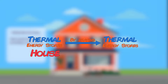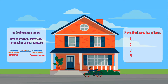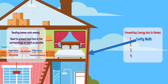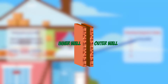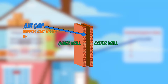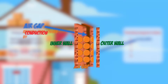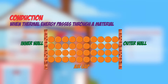There are four main ways to prevent this. The first is having cavity walls — this is when you use two separate walls on the outer layer of the house instead of one. In between the two layers you have an air gap, which reduces the amount of energy transferred by conduction.